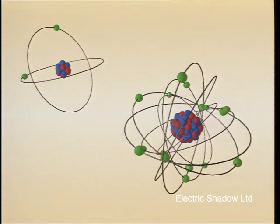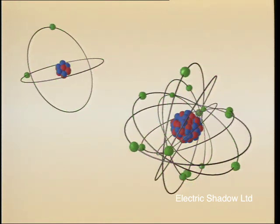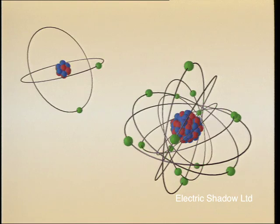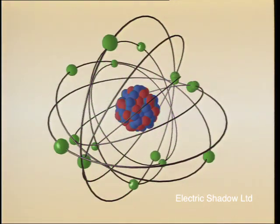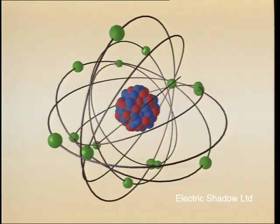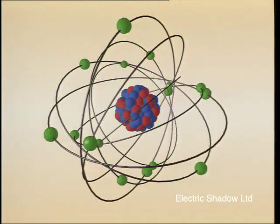Different elements are made up of atoms having a different number of protons and neutrons in the nucleus. The lightest natural element, hydrogen, has atoms with only one proton and no neutrons. The heaviest, uranium, has atoms containing 238 protons and neutrons.